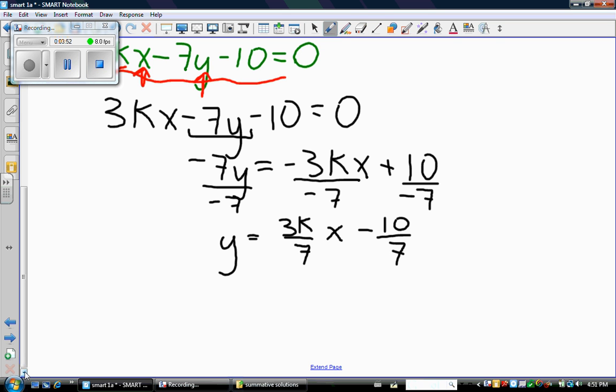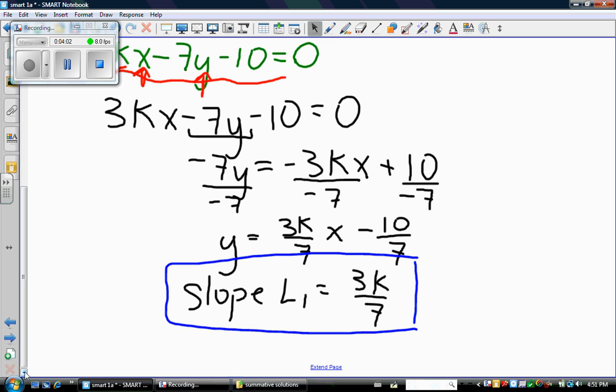So now I have the slope of line 1. It's 3k over 7. And I'll put a box around it so I don't lose it. So, where are we?